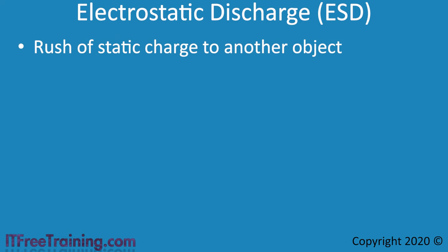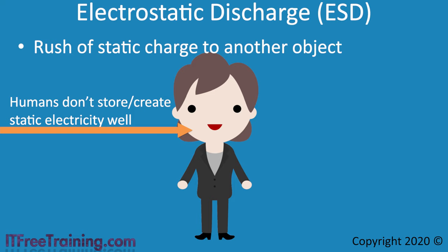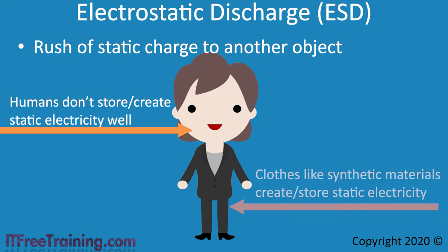Electrostatic discharge is simply a rush of static charge to another object. When an object with a lot of charge comes into contact with an object with no charge, the charge will attempt to equalize across the two objects. To understand this better, consider that you have a human. Humans don't store or create static electricity that well. This is because humans are mostly made of water and our bodies don't generate a lot of electricity. We only need a small amount of electricity to move our muscles and make our hearts beat. However, things like the clothes that we wear can create and store a lot of static electricity. Clothes made of synthetic materials are more prone to creating and storing static electricity. Material like cotton does not create or store as much static electricity as synthetic materials do.